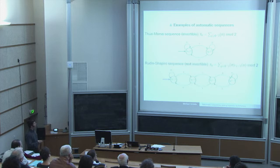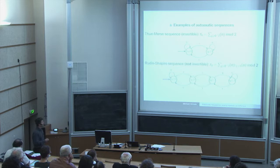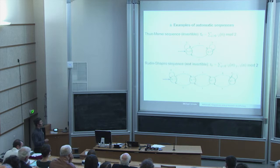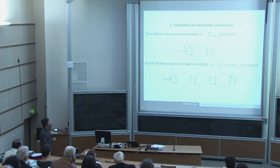Looking at the Thue-Morse automaton: if you get input zero, you stay; if you get input one, you go to the other state. So if you have three ones in your expansion, you go back and forth. In general, if you have an odd number of ones you end up at one state, and if you have an even number of ones you end up at the other state. This automaton gives the Thue-Morse sequence, and it is an invertible automaton.